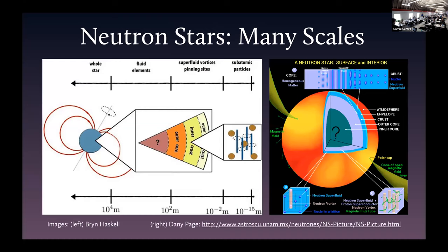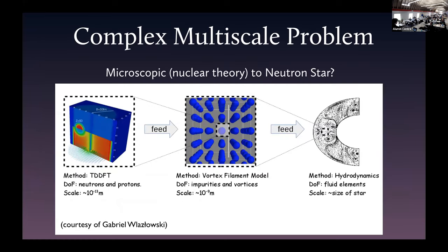This problem covers a lot of scales. We need to go from some microscopic theory or quantum calculations to hydrodynamic models, vortex filament models, and ultimately up to something you can do on the scale of a neutron star. It's a really large multiscale problem, but we need the right inputs — and that's where quantum simulation can work.